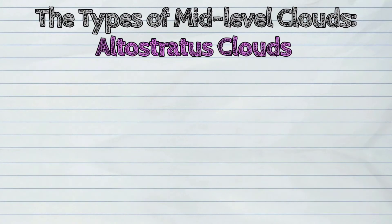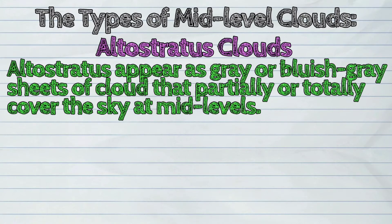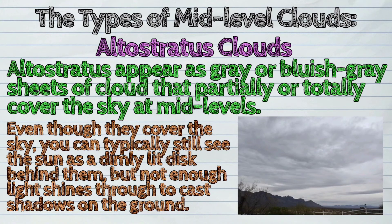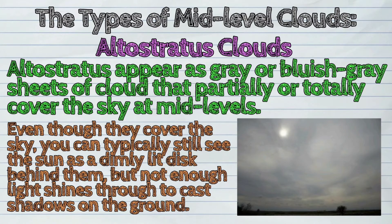And second, the altostratus clouds. Altostratus appear as grey or bluish-grey sheets of cloud that partially or totally cover the sky at mid-levels. Even though they cover the sky, you can typically still see the sun as a dimly lit disk behind them, but not enough light shines through to cast shadows on the ground.